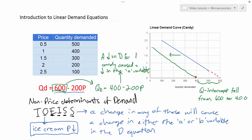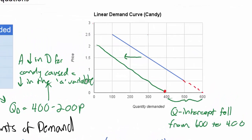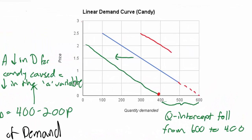For example, what if ice cream prices had increased? As a substitute for candy, an increase in ice cream prices would cause a shift out. So I'm going to show here in the demand curve for candy. And with this increase in demand, we would see the Q-intercept of the demand curve increase as well.